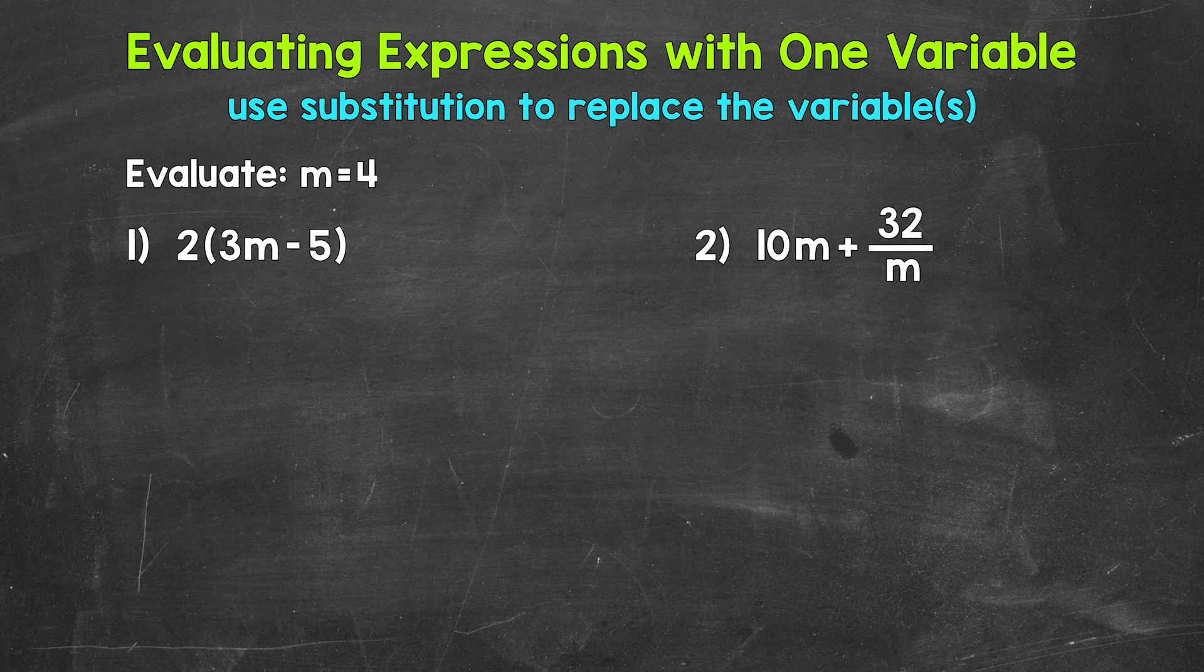Let's jump into number 1 where we have 2 next to parentheses that include 3m minus 5. Whenever we have a number next to a variable like 3m, that means they are being multiplied, so we have 3 times m. And then we also have the 2 next to the parentheses, so that means we have 2 times whatever we get within those parentheses. The first thing that we need to do is replace or plug in the given value for the variable. This is called substitution.